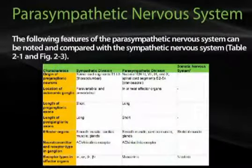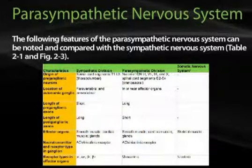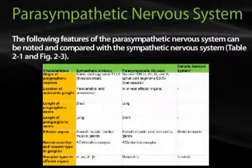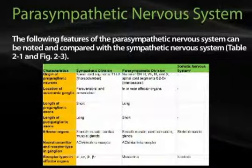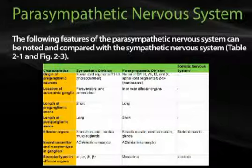Table 2-1 summarizes some of the major features of the sympathetic and parasympathetic divisions, as well as the somatic nervous system. For example, the sympathetic division has its origins in levels T1 through about L3, whereas the parasympathetic division originates in cranial nerves 3, 7, 9, and 10, as well as sacral segments S2 through S4. The ganglia in the sympathetic division are located in the paravertebral or prevertebral chains, whereas in the parasympathetic division, these ganglia are either in or near the effector organs.